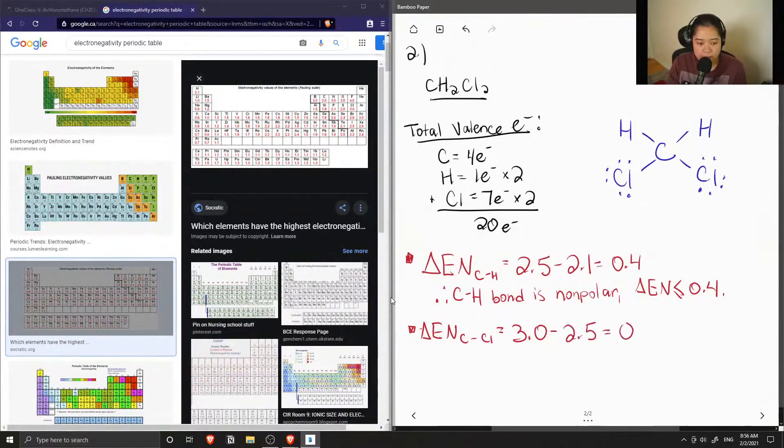So the difference is 0.5. So therefore, the carbon-chlorine bond is polar.